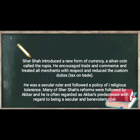He introduced a new reformed currency — a silver coin called Rupiyah. He encouraged trade and commerce and treated all merchants with respect and reduced custom duties. He was a secular ruler and followed a policy of religious tolerance. Many of Sher Shah's reforms were followed by Akbar, and he is often regarded as Akbar's predecessor with regard to being a secular and benevolent ruler.